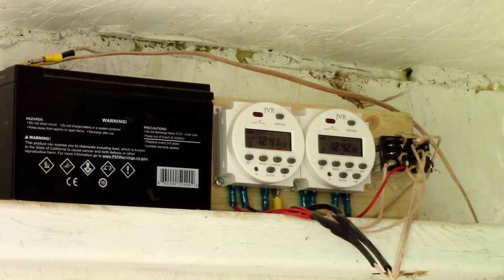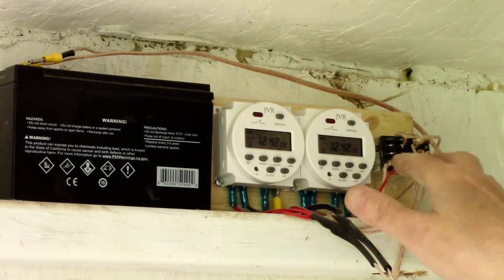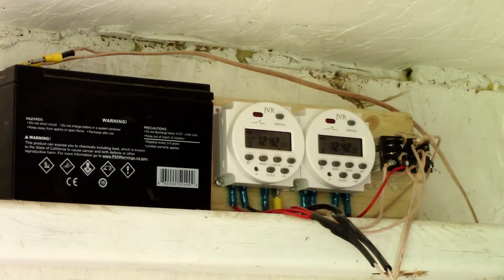You could do this project a little bit more simply using only one timer if you wanted to save a little bit of money. The actuator, the timers, these relays, even the battery are all available on places like Amazon inexpensively. So let's go inside and I'll get to the whiteboard and I'll show you how you can wire all this stuff up.